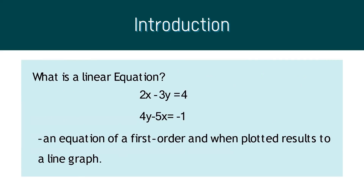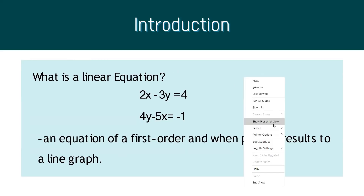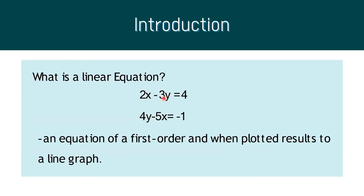As introduced earlier, on the left side we have the variables and constants — known as coefficients — and on the right side are the constants. Using the inverse of a matrix, we can get the value of the unknown variables on the left side to prove that these equations are correct.